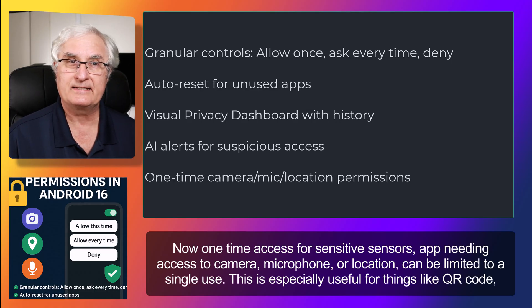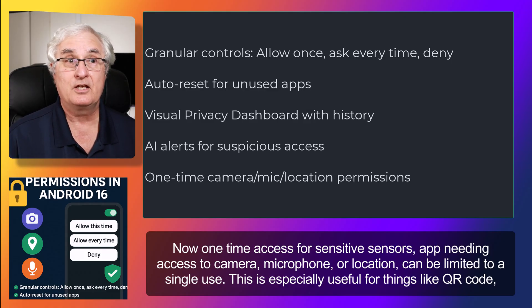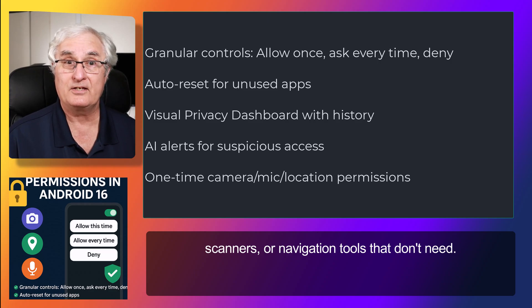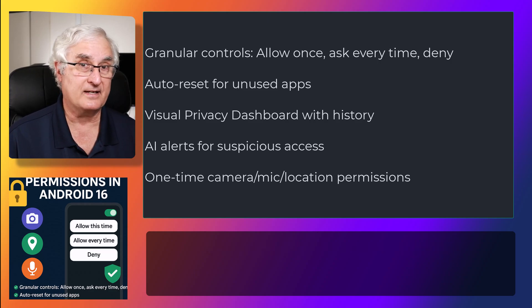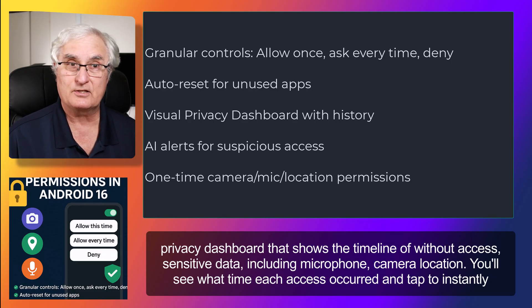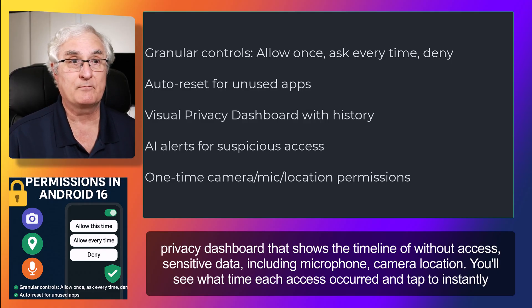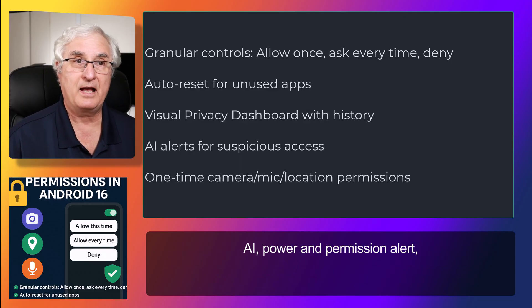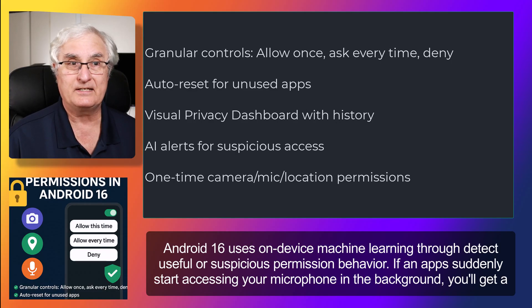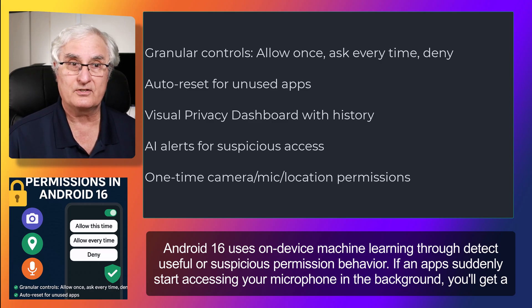There's also one-time access for sensitive sensors. Apps needing access to the camera, microphone, or location can be limited to a single-use session — especially useful for things like QR code scanners or navigation tools that don't need full-time access. There's a redesigned privacy dashboard that shows a timeline of which apps access sensitive data including microphone, camera, and location. You'll see what time each access occurred and can tap to instantly revoke it. Android 16 also uses on-device machine learning for AI-powered permission alerts — if an app suddenly starts accessing your microphone in the background, you'll get a real-time alert.